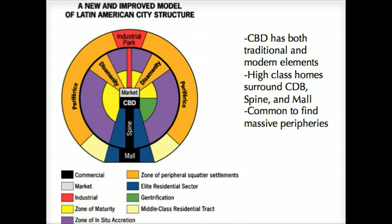In the zone of maturity, you often see gentrification — a rebirth of a particular area near the central business district — so it's constantly renewing itself over time. Generally speaking, migrant workers coming from rural areas, the marginalized and the poor, tend to be on the outskirts of this particular model.